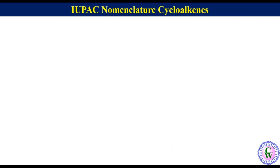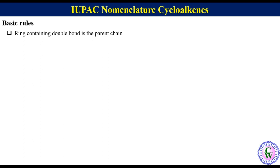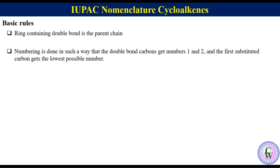There are certain basic rules which we should remember for IUPAC naming of cycloalkenes. The first rule is that the ring containing the double bond is the parent chain. Numbering is done in such a way that the double bond carbons get numbers one and two, and the first substituted carbon gets the lowest possible number.